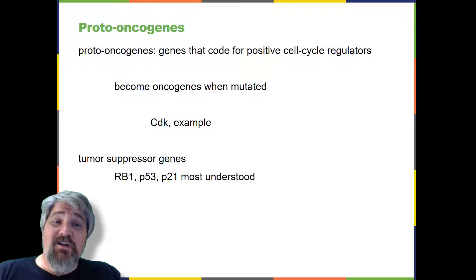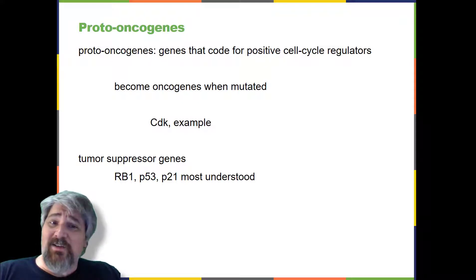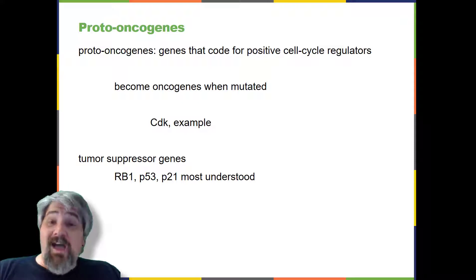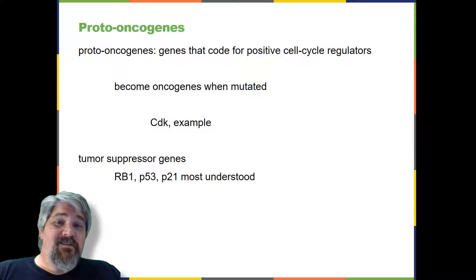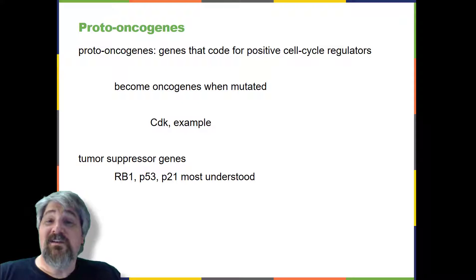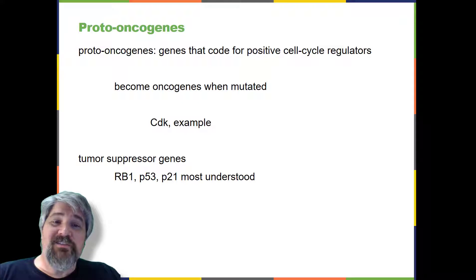However, if the atypical daughter cells are able to divide further, the subsequent generation of cells will likely accumulate even more mutations, some possibly in additional genes that regulate the cell cycle. The cyclin-dependent kinase example is only one of many genes considered proto-oncogenes. In addition to cell cycle regulatory proteins, any protein that influences the cycle can be altered to override cell cycle checkpoints. Once a proto-oncogene has been altered such that there is an increase in the rate of the cell cycle, it is then called an oncogene.